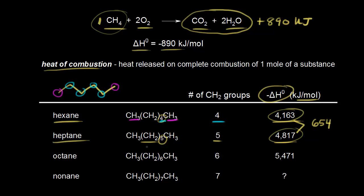The pattern continues as we move on to octane. Now we have six CH2 groups, adding one more. The heat of combustion increases to 5,471 kilojoules per mole — also an increase of 654 kilojoules. So for nonane, with one more CH2, we could predict and estimate the heat of combustion by adding 654 to 5,471.